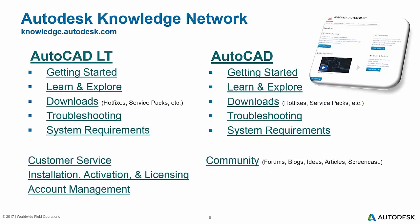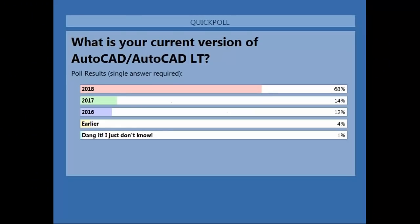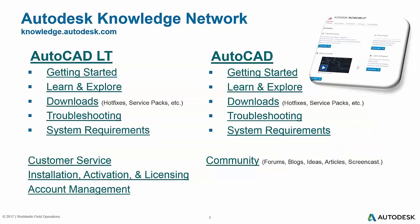Next: what is your current version of AutoCAD or AutoCAD LT? Are you on the most up-to-date or using one of the older ones? It looks like most people are on 2018 right now, a couple people using 2017 and 2016. We've got 68 percent on the latest version, 14 percent on 2017, 12 on 2016, and 4 percent on an earlier version. So if you are on the earlier version, a subscription would allow you to move up to the latest.